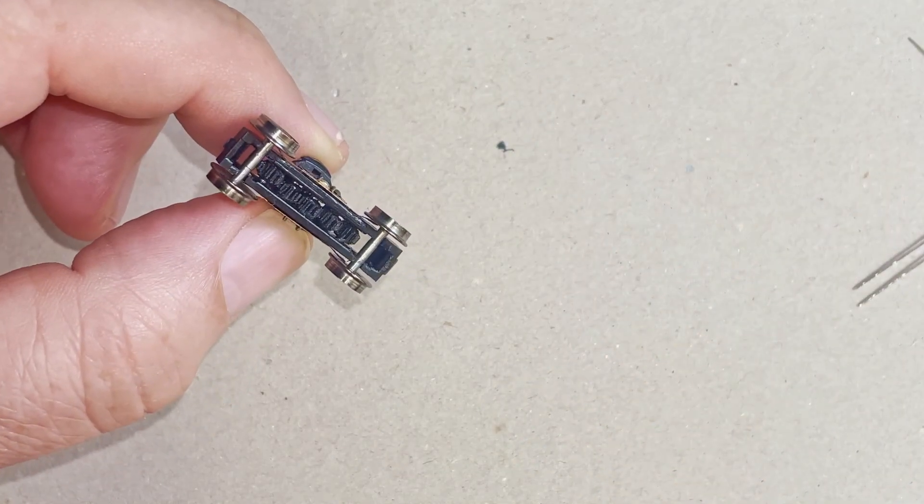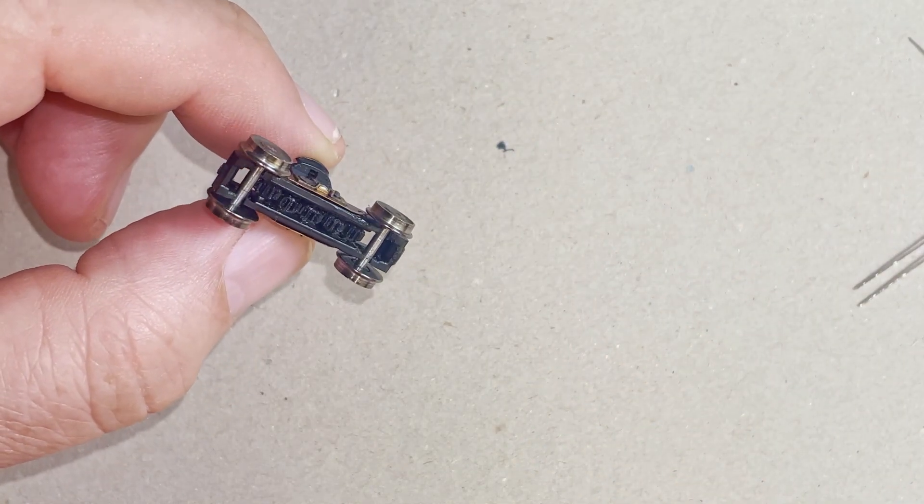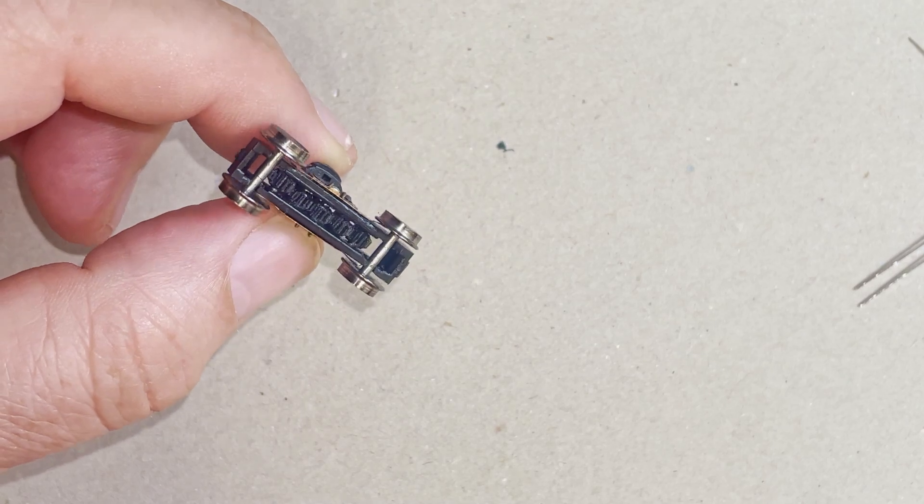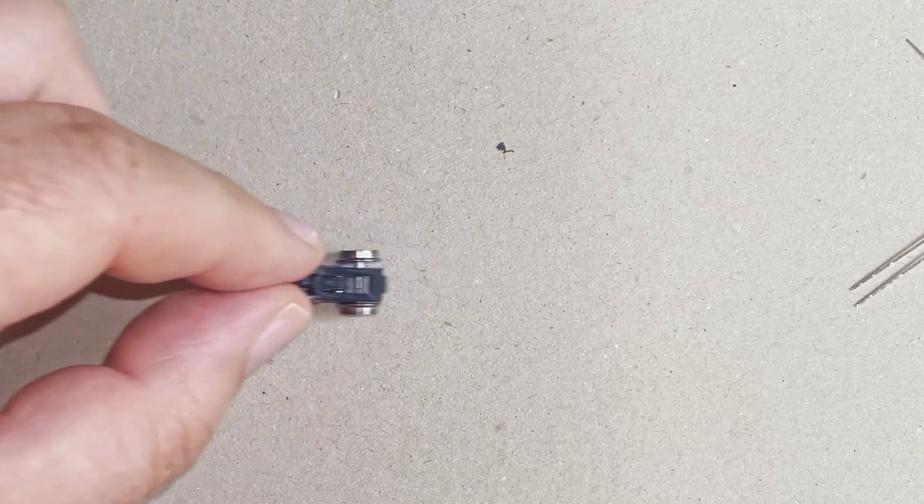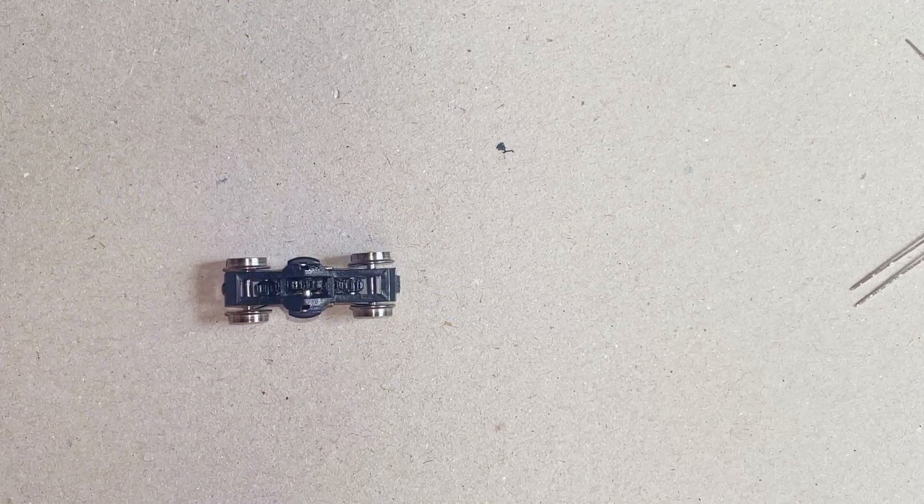I found this bogey in my box of parts. I'm not even sure why it's there to be honest with you, but it's got something missing off the bottom. But it's fine - it's got the pickups and the wheels aren't falling out, so it's perfect to make a moving track tester.